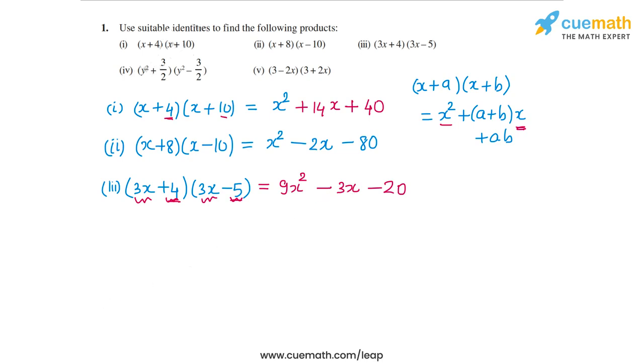In the fourth part, I have (y² + 3/2) and (y² - 3/2). This is the product that I have to calculate. Now this is of the form (x+a)(x-a), or (x+y)(x-y). And that leads to a difference of two squares.